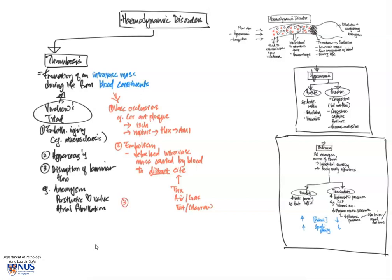There are several other fates of thrombi, and they would include organization or recanalization, where you can get the formation of new small lumina within the vessel, and therefore this can restore the patency to some extent of the vessel.